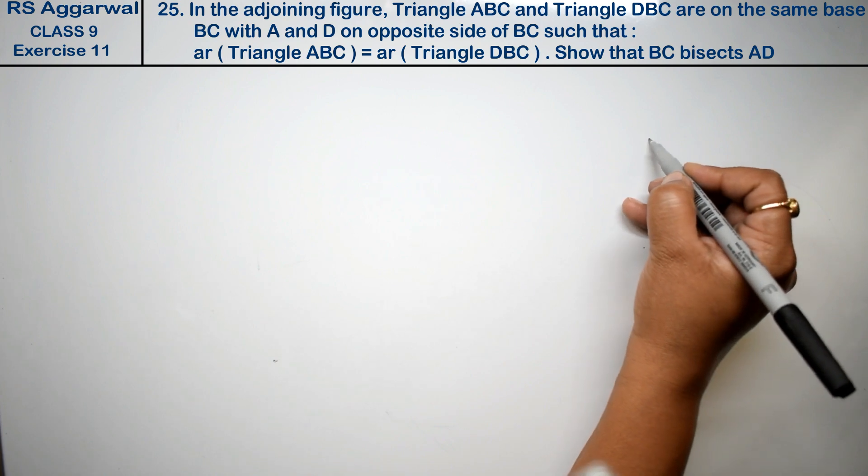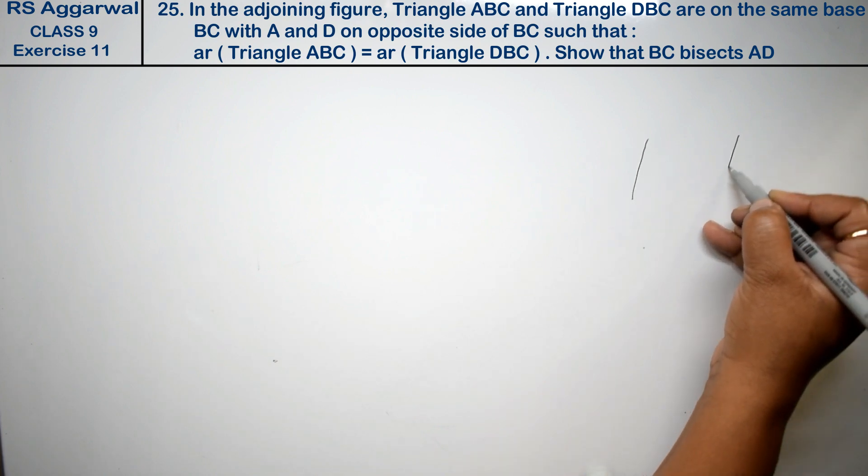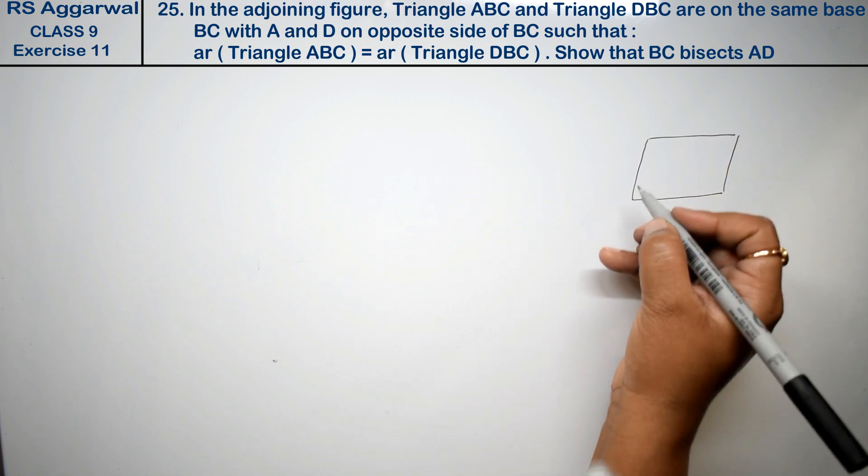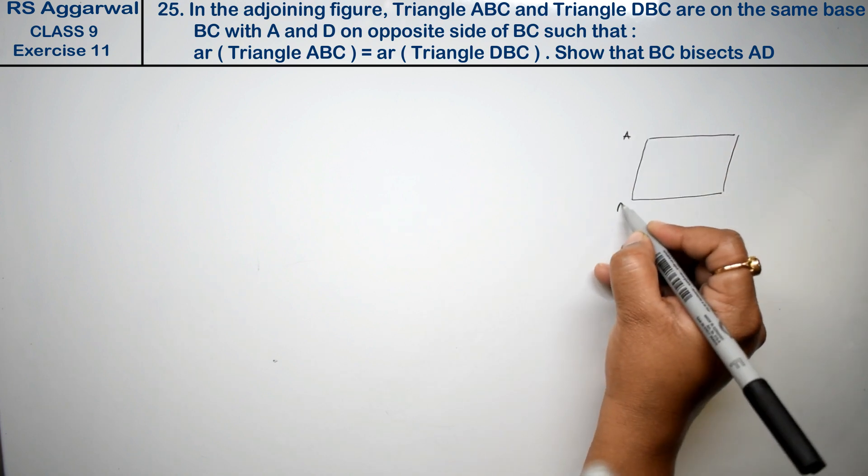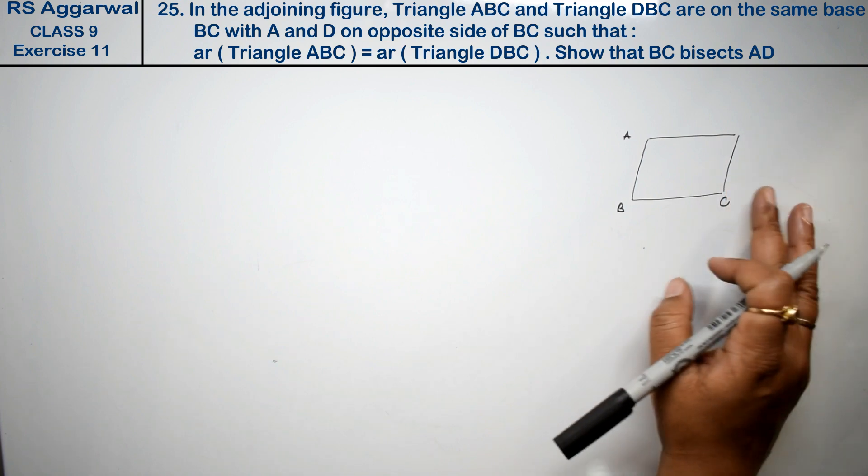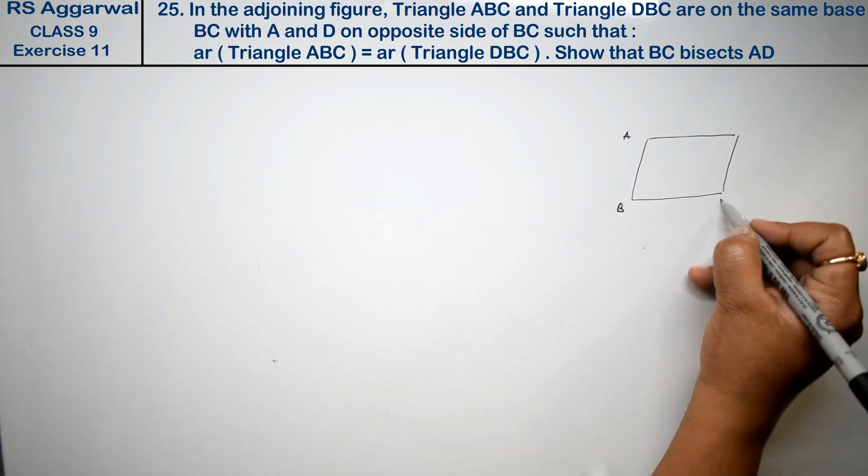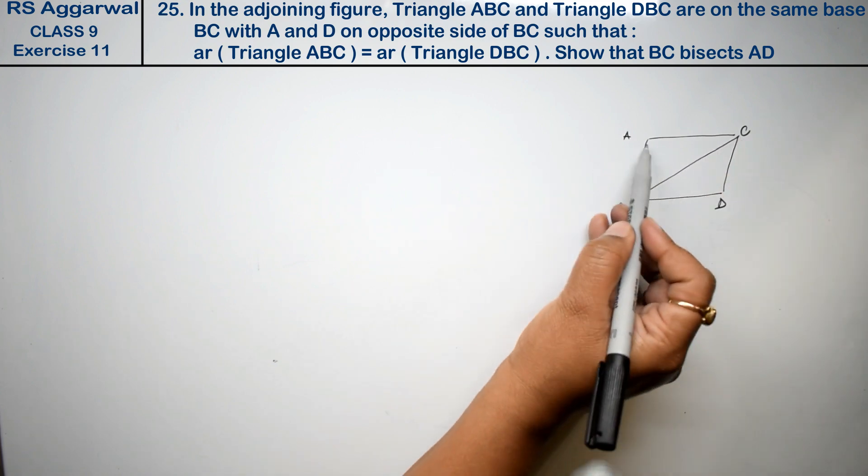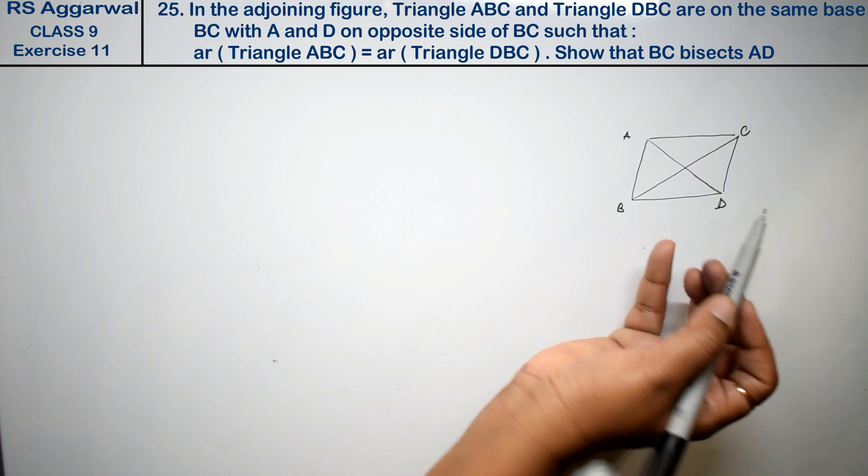Let's make a figure, a parallelogram type quadrilateral. We will say A, B, C. This is D and this is C. And this is the join and this is the join.